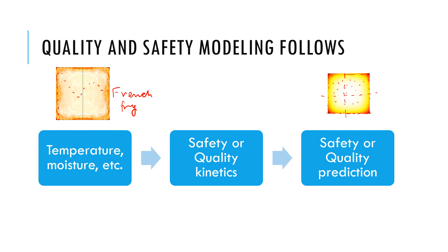In an analogous way, chemical safety or microbiological safety can be predicted by combining their kinetics with temperature or moisture information. For example, we can combine the kinetics of acrylamide — a carcinogen formed in heating of potatoes at higher temperature — with the temperature information at any location and time to predict acrylamide formation over space and time. Similarly, microbiological concentrations can be calculated as a function of position and time.